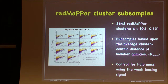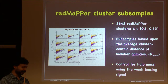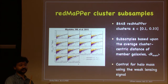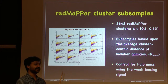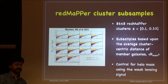RedMaPPer identifies clusters using the red sequence technique and assigns probabilities to each galaxy for being the central of the cluster, based on a spatial filter — an NFW profile expectation around the central galaxy — and a filter for brightness, since the brightest galaxy is most likely to be the central. In the end, they give five tentative centrals, each with a probability. That is how the central is defined.